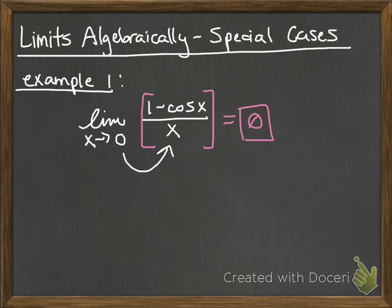That is your first special case. So if you ever see 1 minus cosine x over x, and you're approaching 0, you can automatically replace it with a 0 for a special case. Let's take a look at the second one.